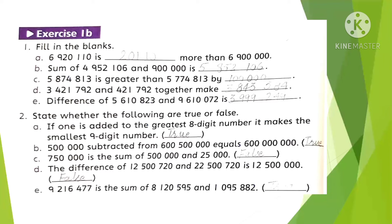Exercise 1A is finished. Now we start Exercise 1B: Fill in the blanks. To find how much more one number is than another, subtract the smaller from the larger. The sum of two given numbers is found by adding them. To find how much greater one number is, subtract the first amount from the second. Part D: given amounts together means you add them. The difference between two terms is found by subtracting the first from the second.